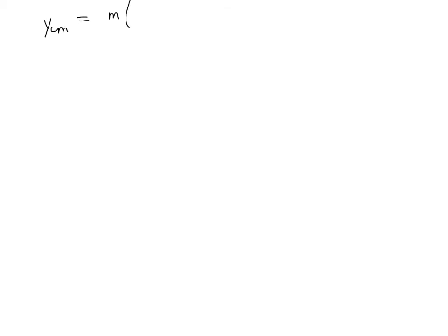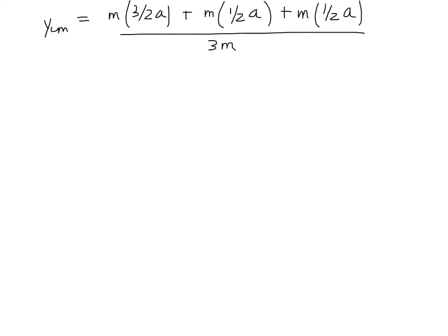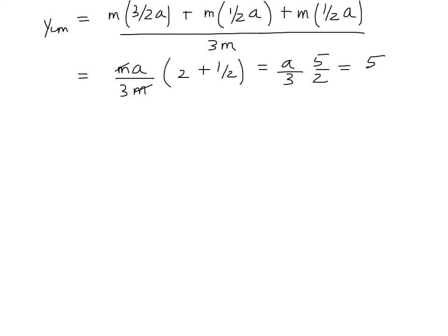For the y-coordinate of the center of mass, it's the same idea. The y center of mass equals the mass of block 1 times its y-position, which is 3/2 a, plus the mass of block 2 times its y-position, which is 1/2 a, plus the mass of block 3 times its y-position 1/2 a, all divided by 3m. Taking out m and a and dividing by 3m — which cancel — we have 3/2 plus 1/2 plus 1/2, which is 5/2, giving us 5/6 a.